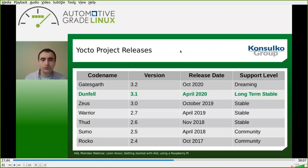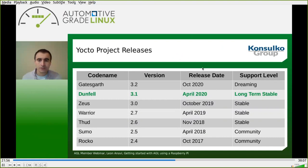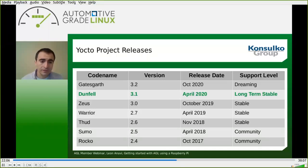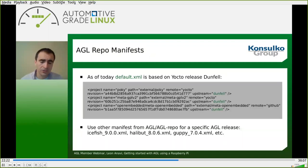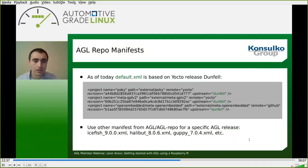Let's have a look at the Yocto project releases. AGL heavily relies on the Yocto project and OpenEmbedded, which releases twice per year. The Yocto project Dunfell is a long-term stable release made available in April 2020, and the latest AGL release is based on Dunfell. If you're building AGL master, the default manifest XML file is already based on Yocto release Dunfell.